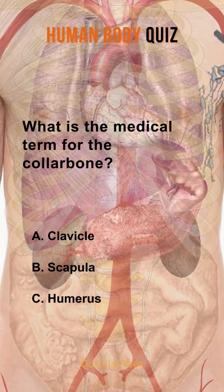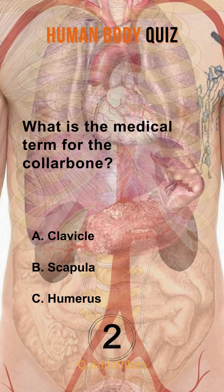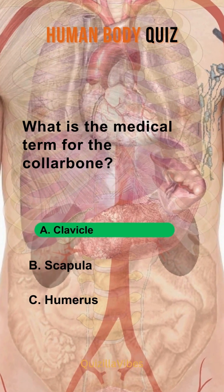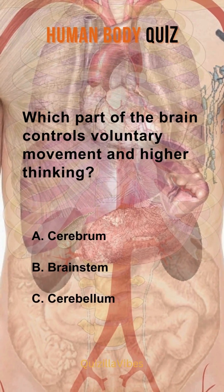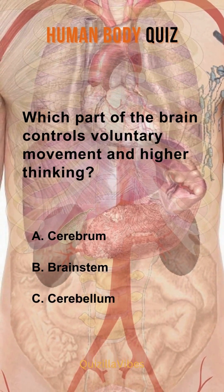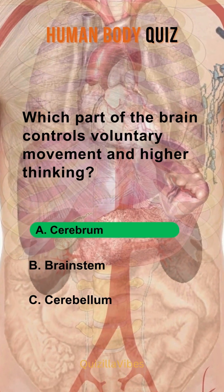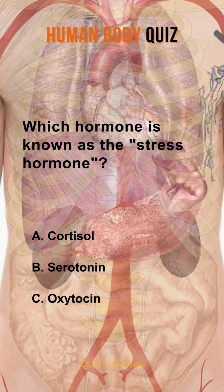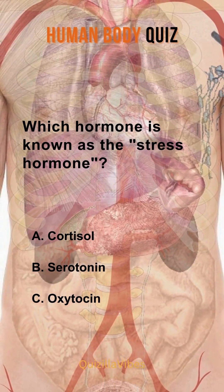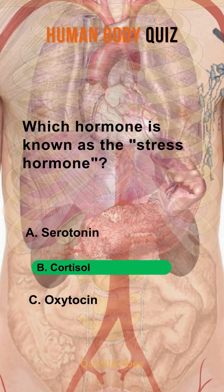What is the medical term for the collarbone? Clavicle. Which part of the brain controls voluntary movement and higher thinking? Cerebrum. Which hormone is known as the stress hormone? Cortisol.